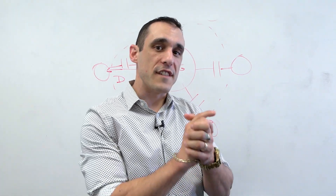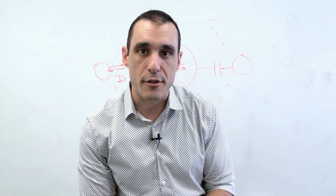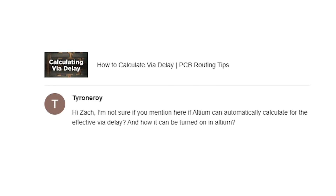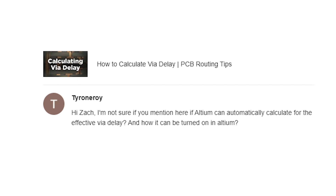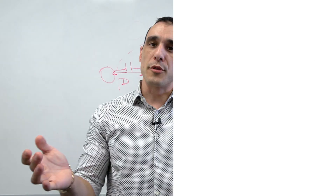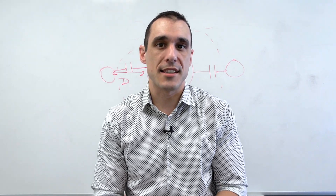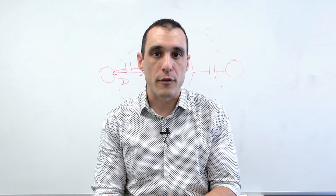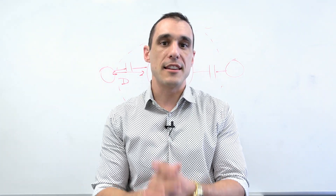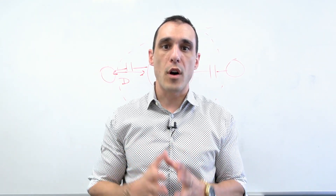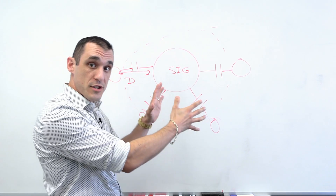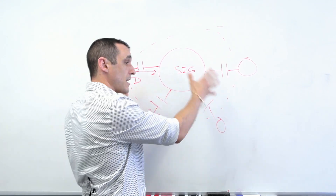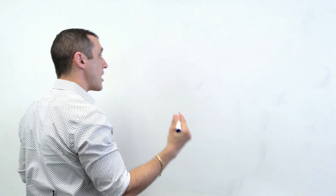Our next question is on our via delay calculation video. Tyrone Roy writes: I'm not sure if you mentioned here if Altium can automatically calculate the effective via delay, and how can it be turned on in Altium? Unfortunately, that tool does not exist in Altium Designer. You do need a field solver in order to calculate the effective delay across that via structure, because it's going to depend on what is located around the via — just like we were talking about with the stitching vias located around your signal via.